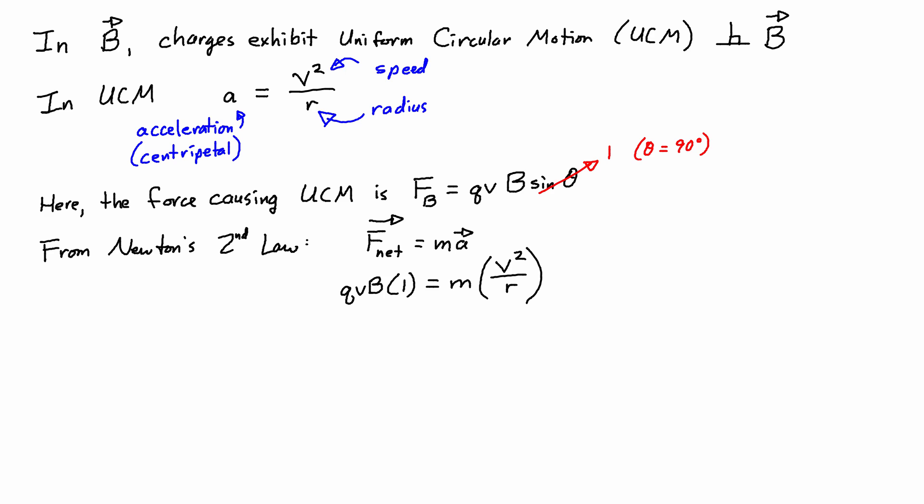The original question was to figure out which particle had greater speed, so I want to isolate the speed v. I notice there's a v on the left and v squared on the right, so I can cancel out the squared, which cancels out the one on the left, and that gives me q times B equals m v over r. So if I want to isolate v, I just multiply by r and divide by m, so I get v equals qBr over m.